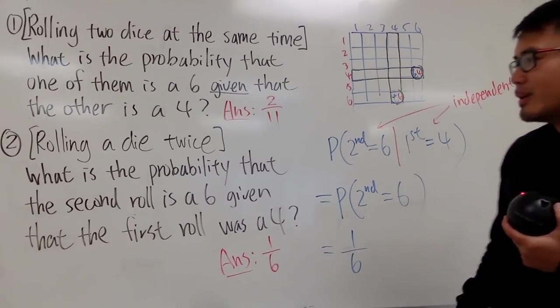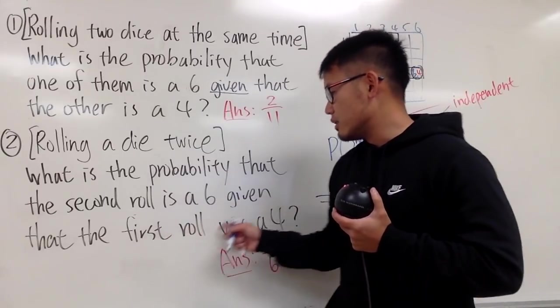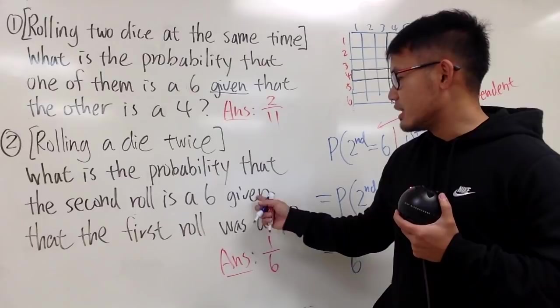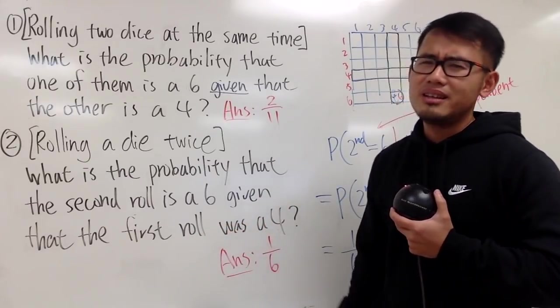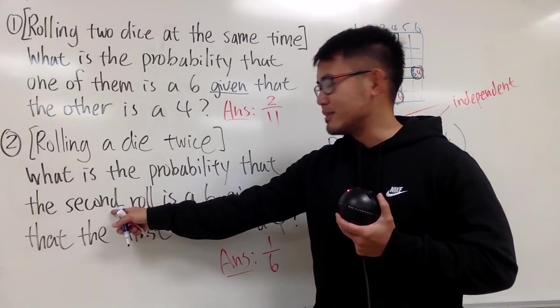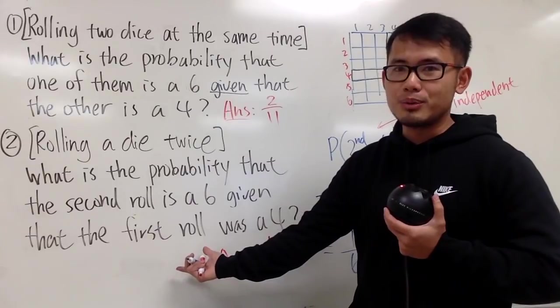And, you might be wondering, why did I really have to say the second roll is a 6, given the first roll was a 4? Why could I not say given the second roll was a 4? It doesn't even make sense. Because, this has to happen second after that. So, given the first roll, that's the only possible way.